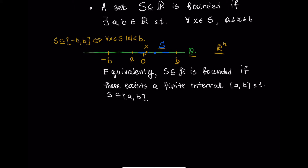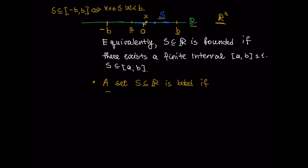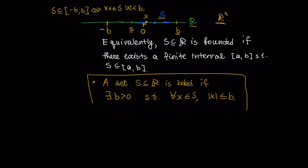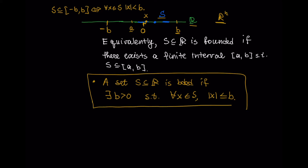This inspires another definition of a bounded set. A set S, that is a subset of R, is bounded if there exists a number B greater than zero such that for every x in S, the absolute value of x is less than or equal to B. This is another definition of bounded set and it is easier for us to generalize this definition to the case of Rn.